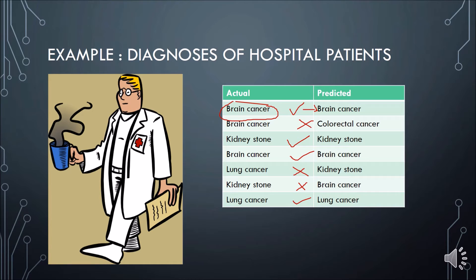Basically, you train a model by having it look at certain parameters, and then based on the patterns established by training, you can ask that model to make predictions later on new data sets, which we call test sets.